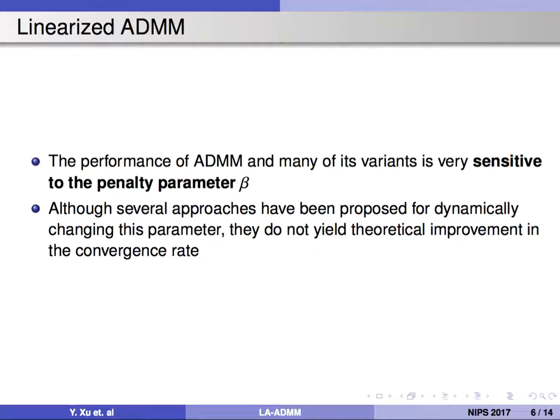ADMM has received lots of success for solving problems in machine learning, statistics, and signal processing. The performance of ADMM and many of its variants is very sensitive to the penalty parameter. Several approaches have been proposed for changing the parameter beta, but they do not yield theoretical improvement in the convergence rate.